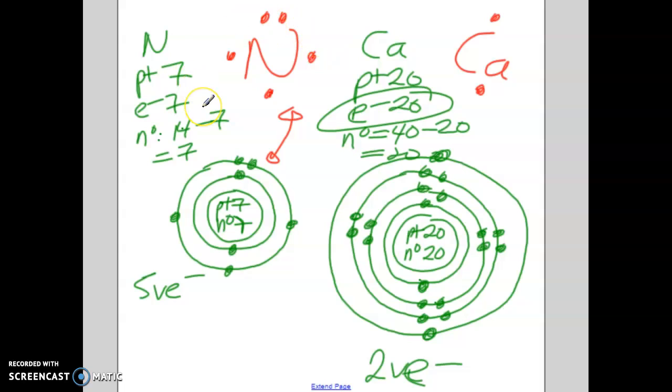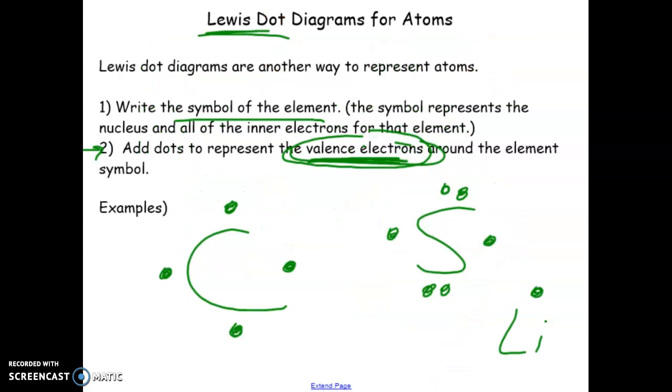Lewis diagrams are great as well, but it's not as detailed. It's kind of like a little mini shortcut to drawing atoms. But the reason why we're learning this now is because Lewis dot diagrams are very useful when we start talking about more complex structures that atoms can make. And it'll make more sense later on. So we have Bohr-Rutherford and Lewis dot. We have two different ways of representing atoms.